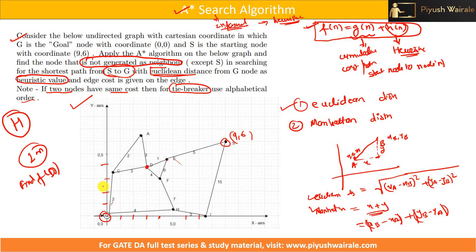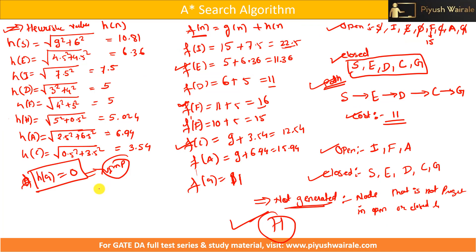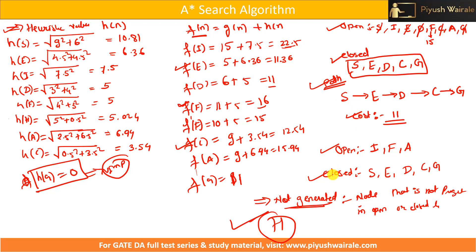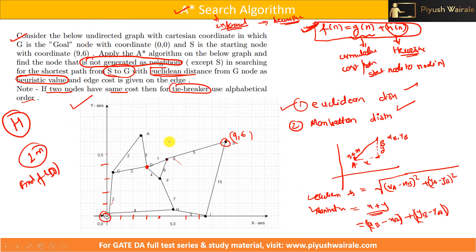I hope you understand the concept — if the concepts are clear, you can solve any type of question. Make sure you know Euclidean distance, Manhattan distance, open list, closed list, not-generated nodes, how to calculate f(n), and heuristic values. The graph will change and they may ask for Euclidean or Manhattan distance, but the approach stays the same. Please try to solve this question on your own after this tutorial. Thank you.